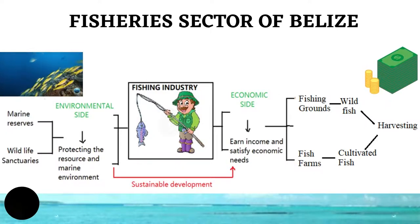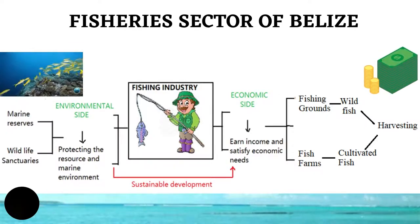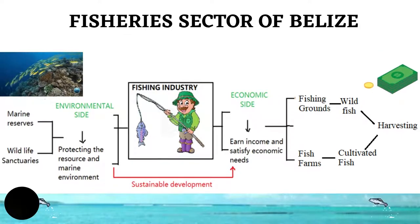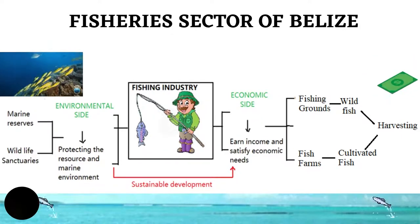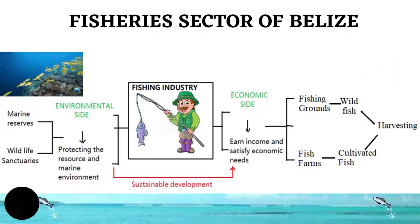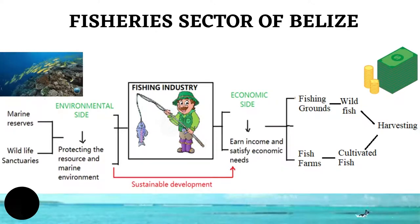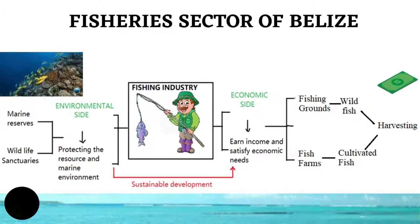Fish grow wild on fishing grounds but are also reared on fish farms. The mature fish from both environments are harvested and sold for profit.